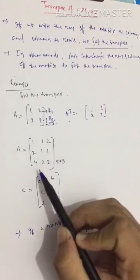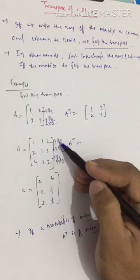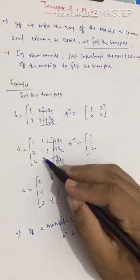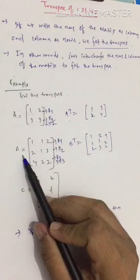The next example is a 3×3 matrix: B = [1, 1, 2; 2, 1, 3; 4, 2, 2]. For B-transpose, just interchange the rows into columns. R1 as C1 gives 1, 1, 2; R2 as C2 gives 2, 1, 3; and R3 as C3 gives 4, 2, 2. So this is your B-transpose, the transpose of matrix B.